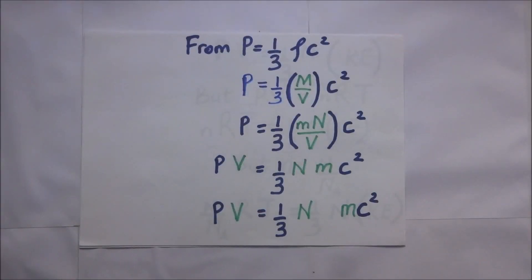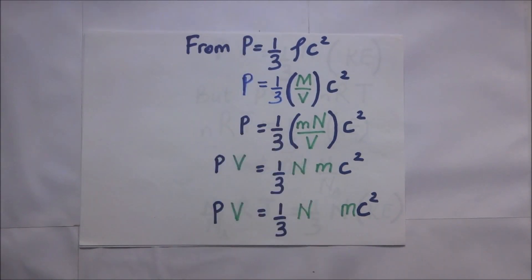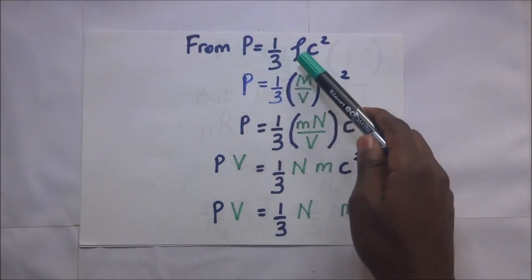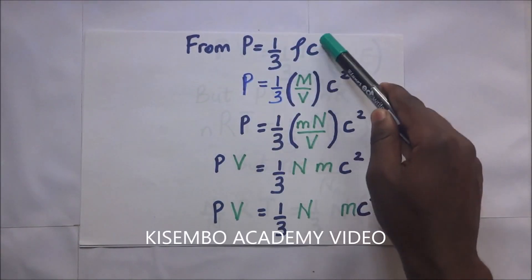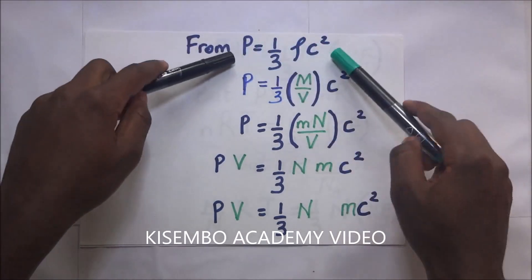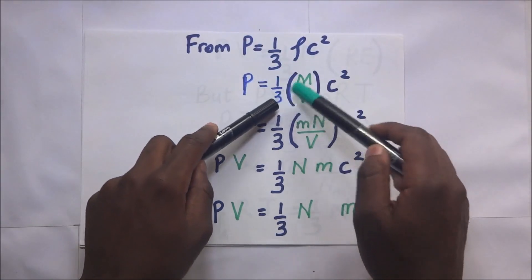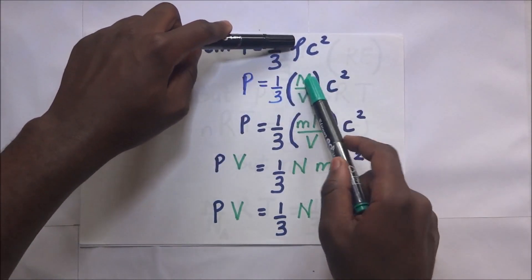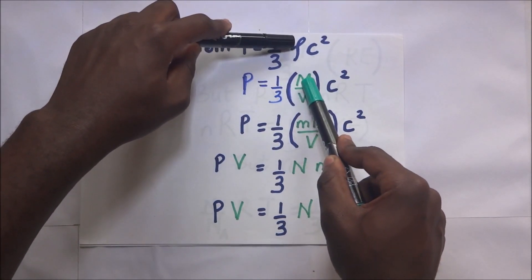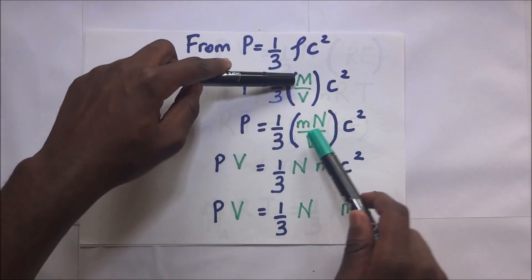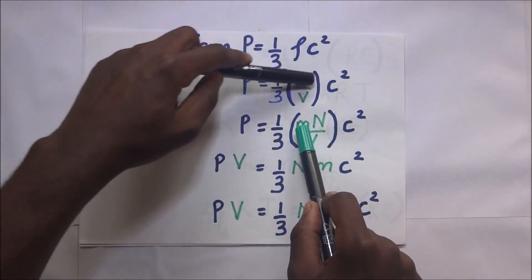We are going to show this from the expression of kinetic pressure. We know that the pressure of an ideal gas is equal to one-third times the density of that gas times the velocity squared, where velocity is denoted by C. We go ahead and break this expression down: P equals one-third times the density.